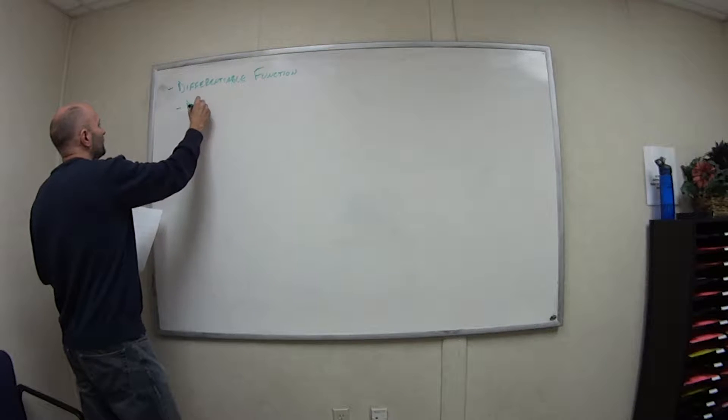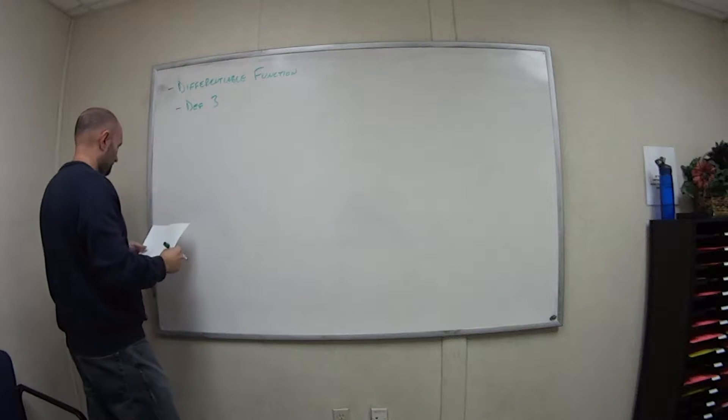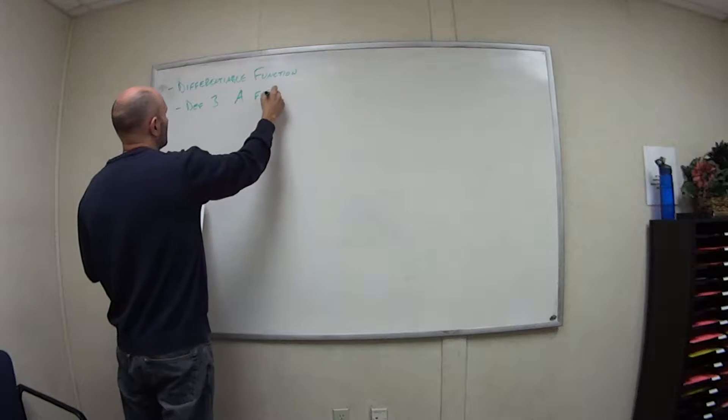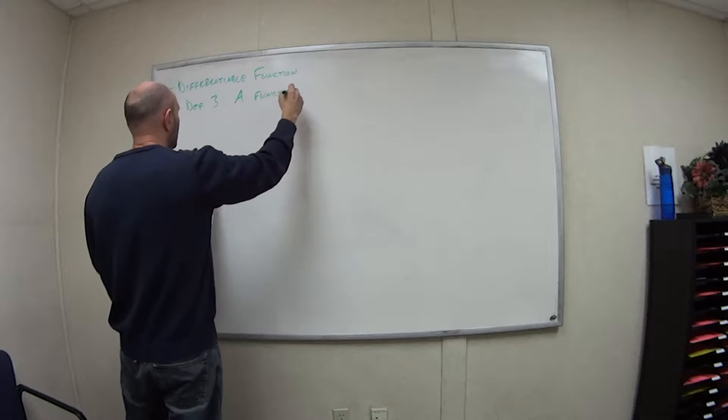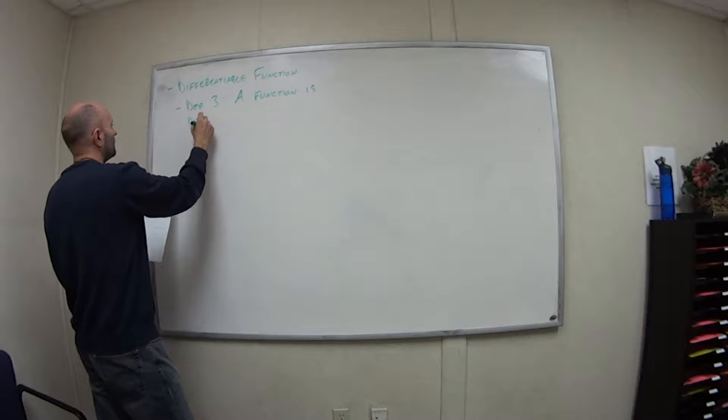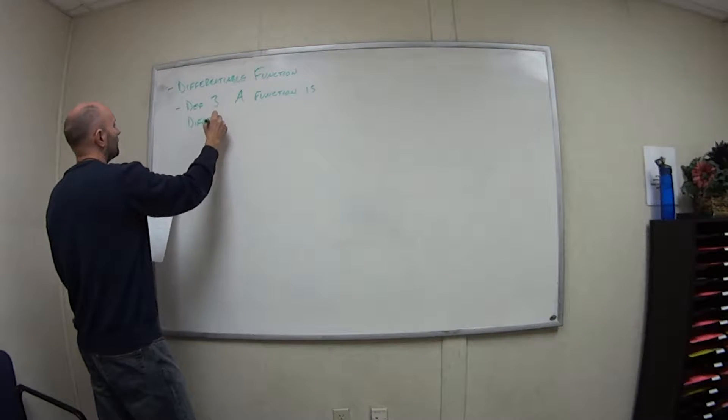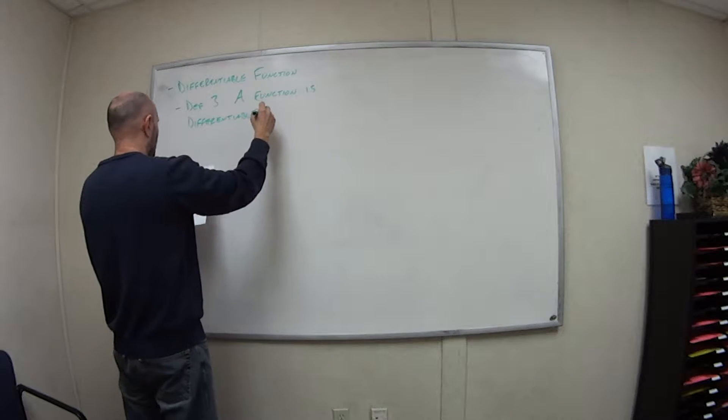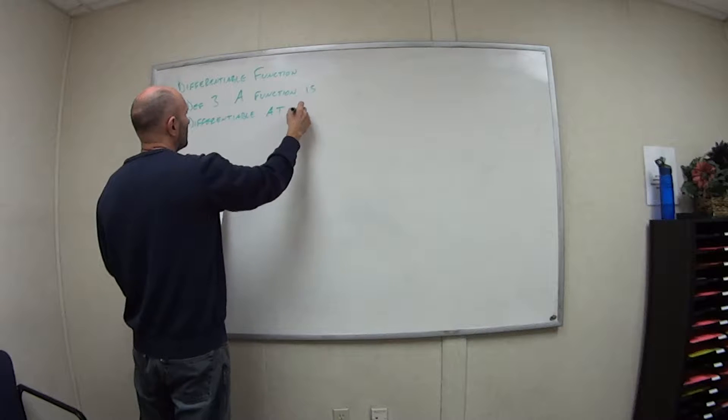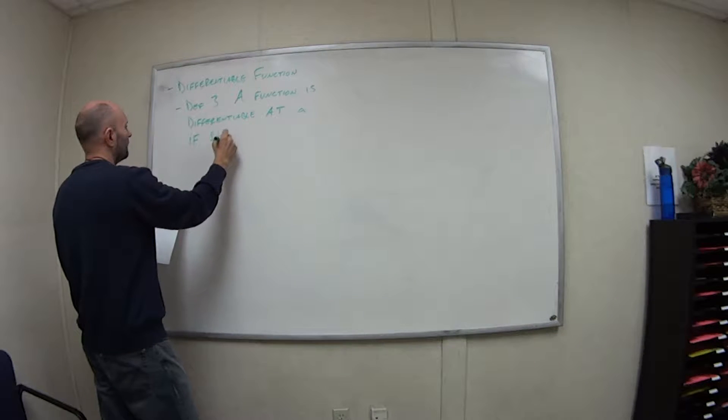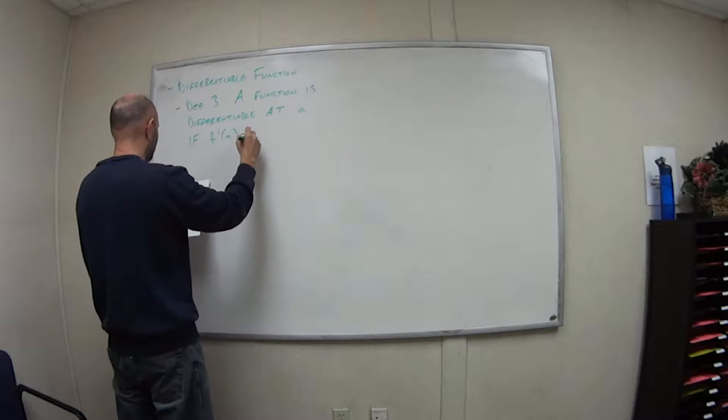So definition, this is number three in this section. A function is differentiable at a if f prime of a exists.